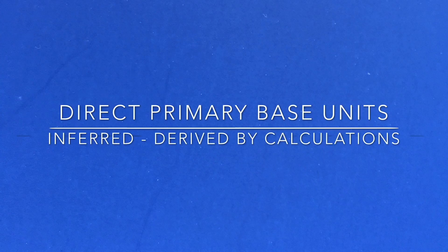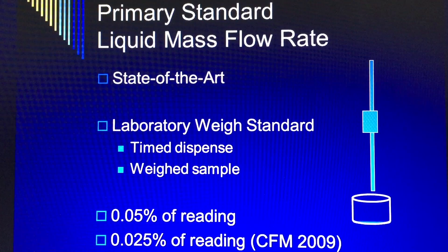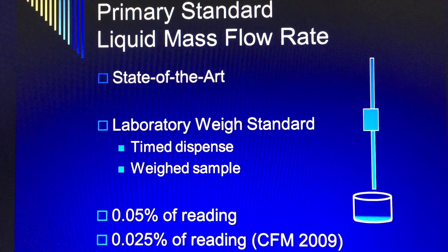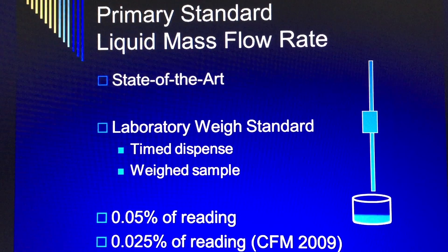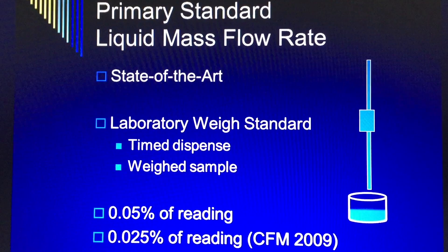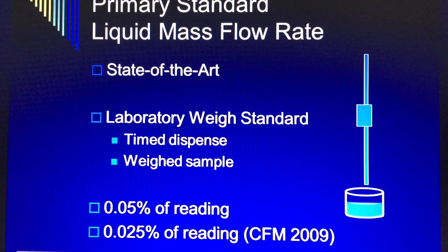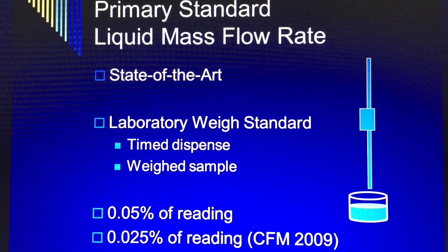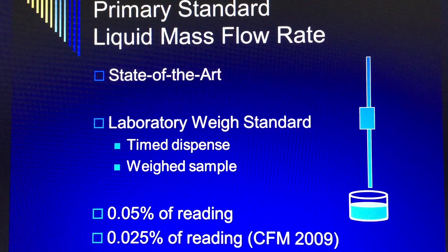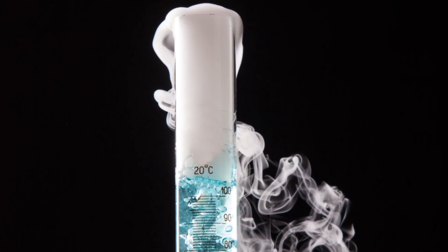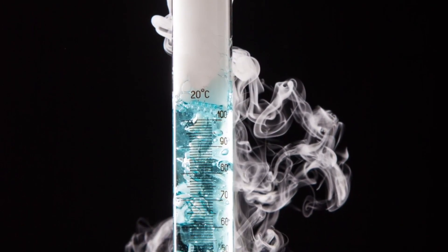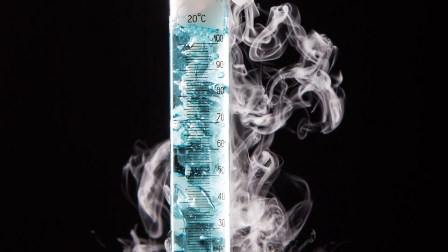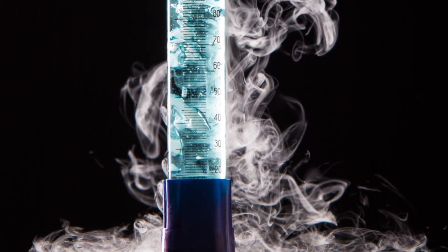Flow rate can be measured directly using primary base units or inferred, derived by calculations. A timed dispense, also known as the bucket and stopwatch approach, is a primary unit standard for flow rate. When the collected sample is weighed, it is a mass flow standard. When the sample is collected into a graduated volume container, it is a volume flow rate standard.